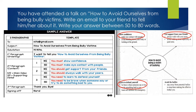Three paragraphs means: the first paragraph is your greeting or introduction — 'I want to tell you about how to avoid ourselves from being a bully victim.' You just take from the title to introduce what you are going to write. The second paragraph is the content. The third paragraph is the conclusion — 'Thank you and bye' or 'See you soon.' The signing off is just your name. Remember, an email does not need a signature, just your name.